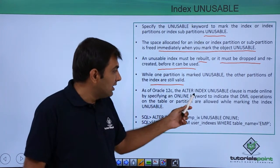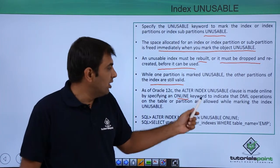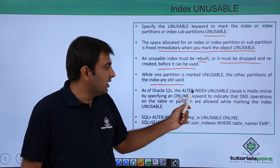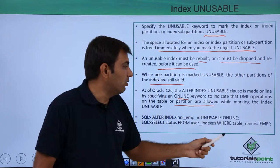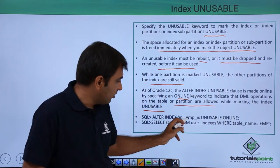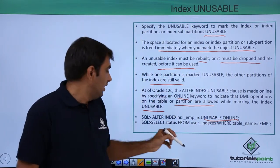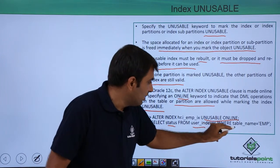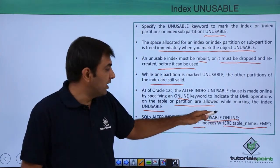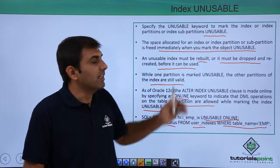In Oracle Database 12c, the alter index unusable clause can be made online by specifying the online keyword. The syntax is: ALTER INDEX index_name UNUSABLE ONLINE. This indicates that DML operations on the table or partitions are allowed while marking the index unusable. You can check the status by querying: SELECT status FROM user_indexes WHERE table_name = 'EMP' — the status will show as unusable.